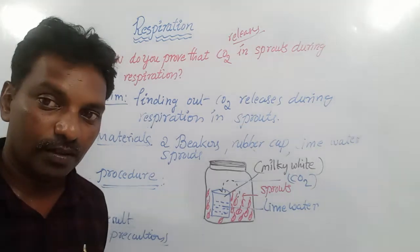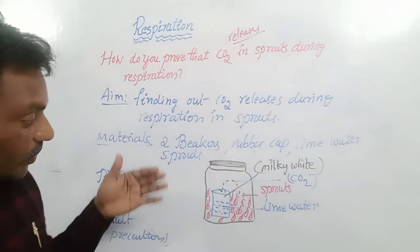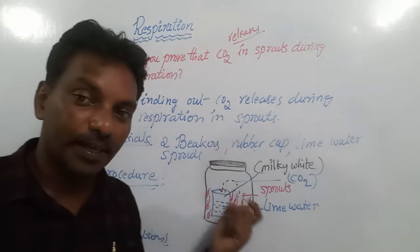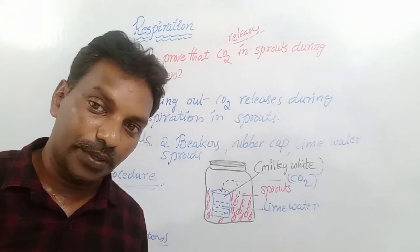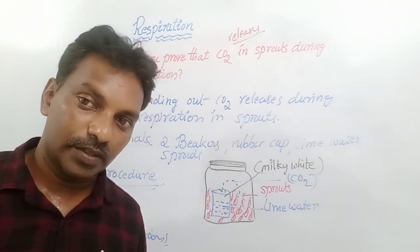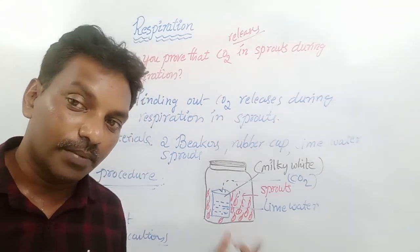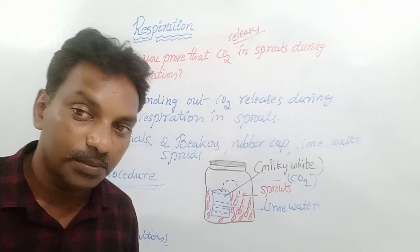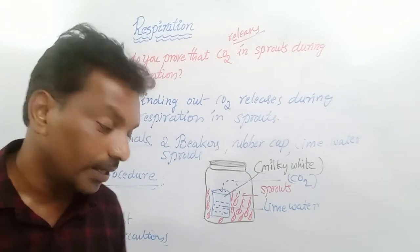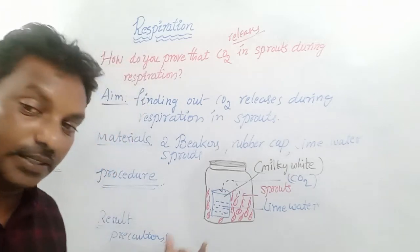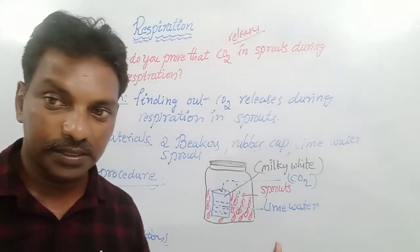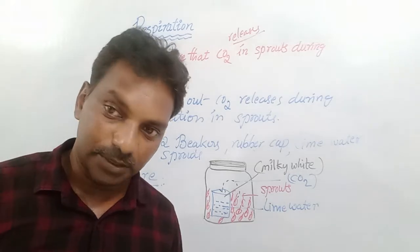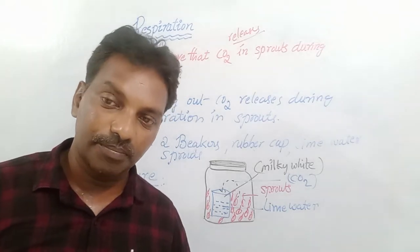This is a four marks question. In the procedure you have to write from beginning to ending how you are doing the activity, and draw the picture. The result is: sprouted seeds release carbon dioxide during respiration.